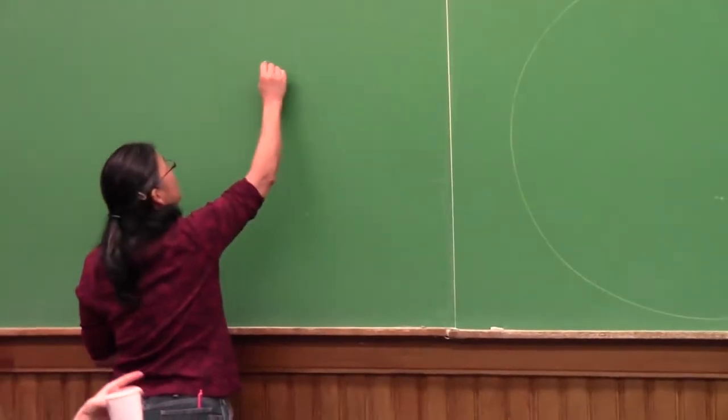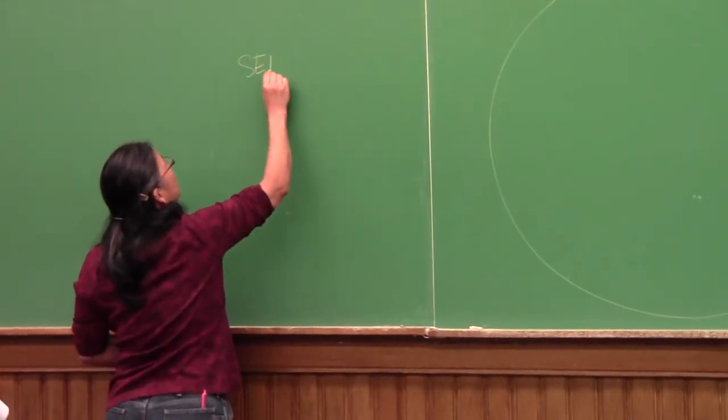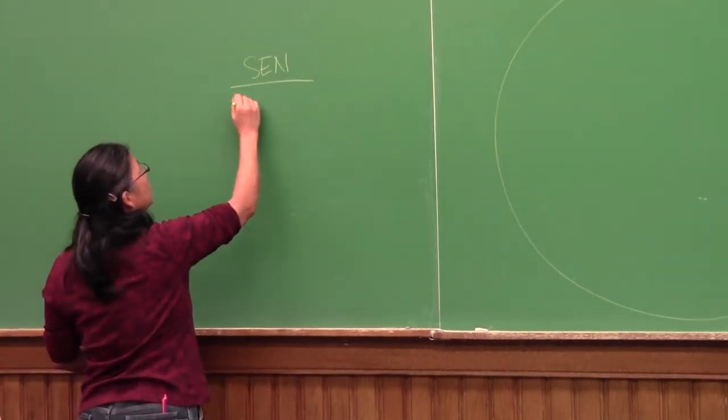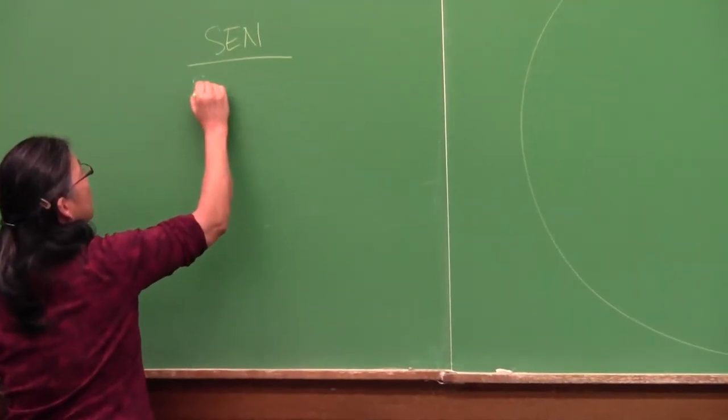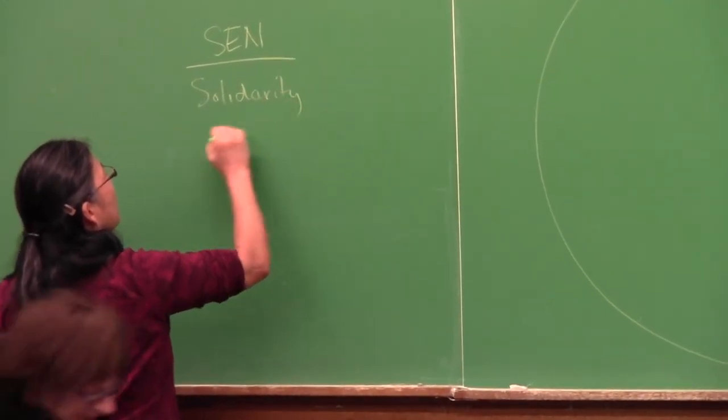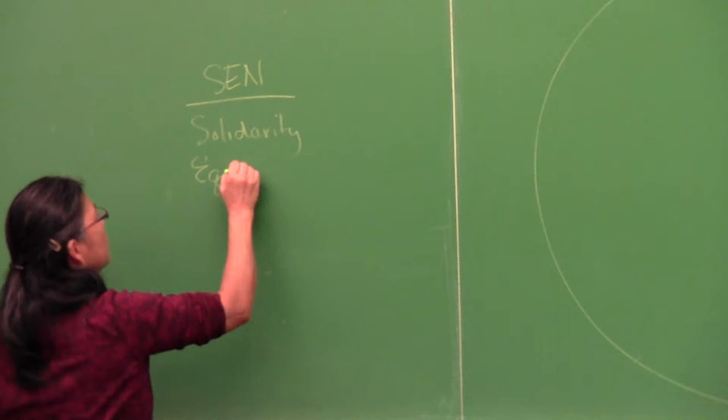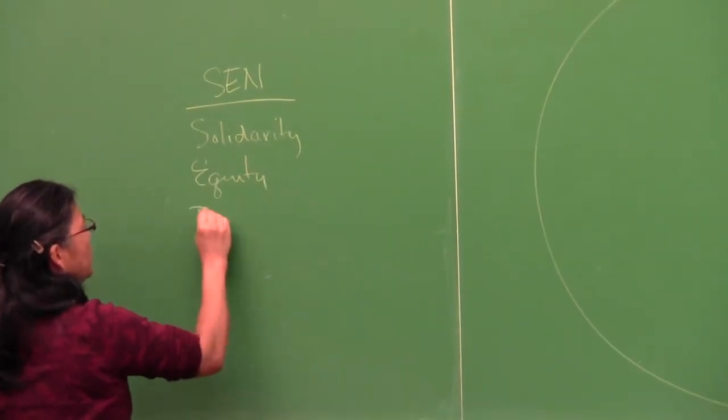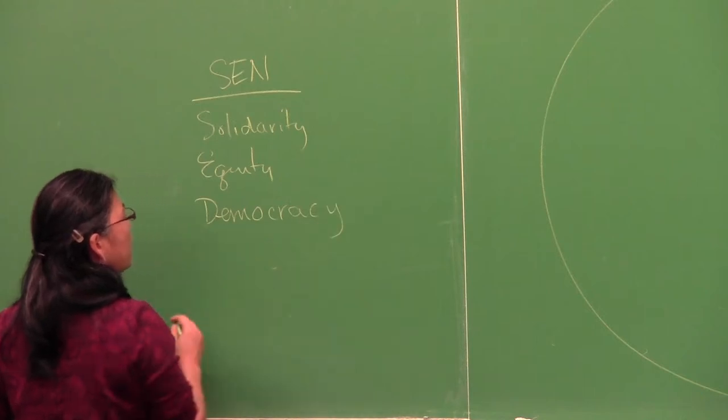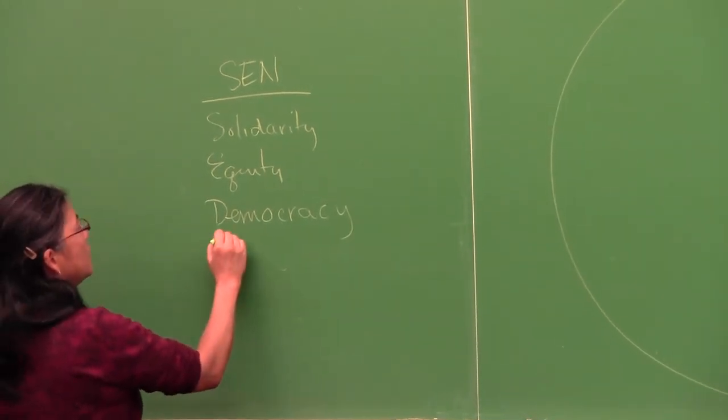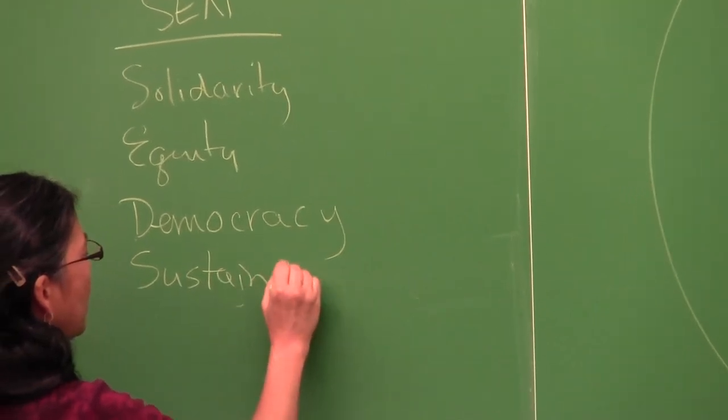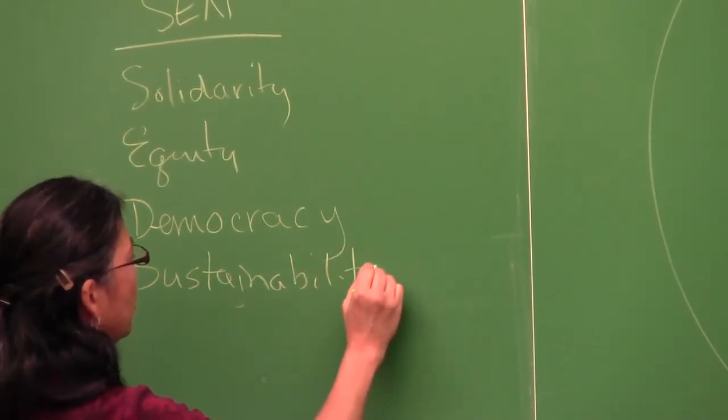The Solidarity Company Network is using these principles as organizing principles: solidarity, equity in all dimensions, democracy, workplace, government, etc., sustainability, and pluralism.